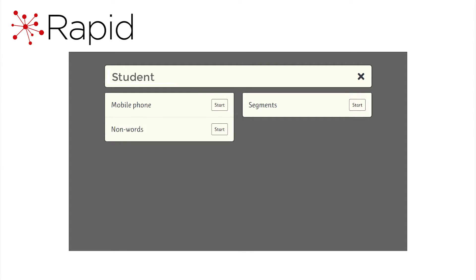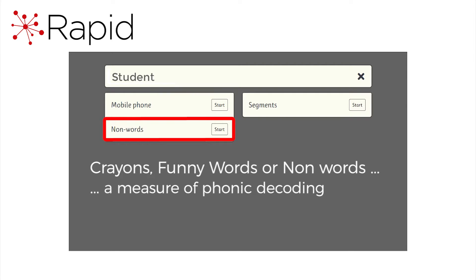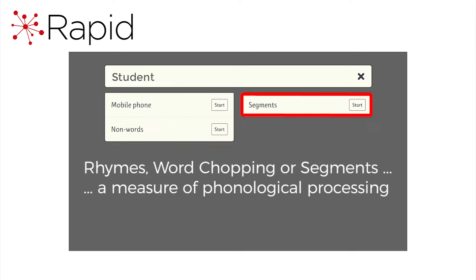There are three subtests in RAPID, each presented as a child-friendly game. Depending on age, the student will see races or mobile phone, which gives a measure of auditory sequential memory; crayons, funny words or non-words, which provides a measure of phonic decoding; and rhymes, word chopping or segments, which provides a measure of phonological processing.